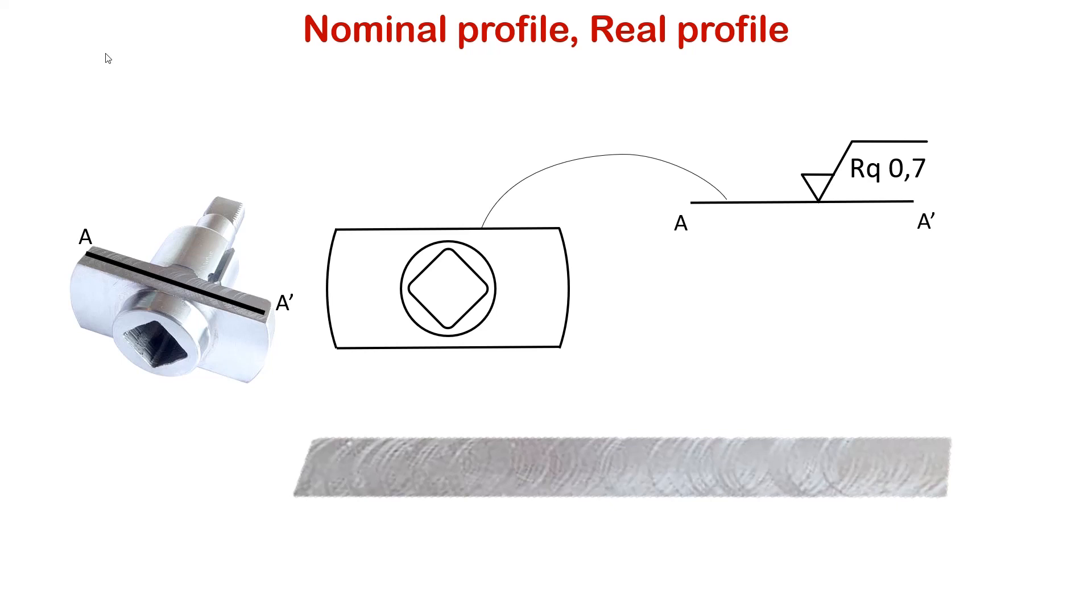This profile is then qualified with a surface texture specification, for example using the parameter RQ and the upper limit of 0.7 microns. The nominal profile is a theoretical profile imagined on the drawing. This is generally a line or an arc or in more complex cases a spline shape.